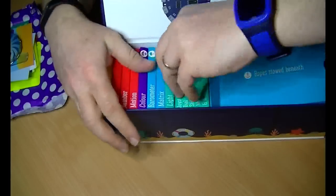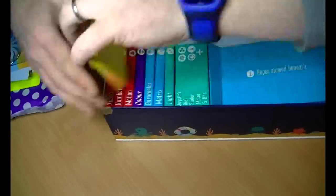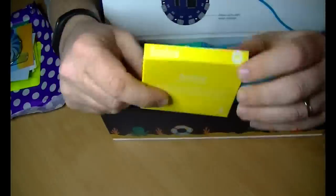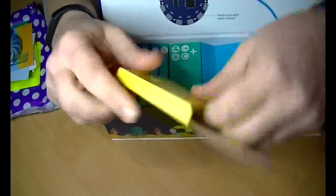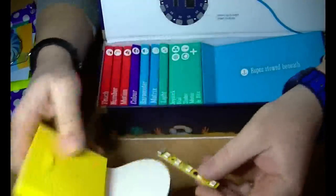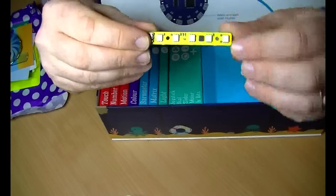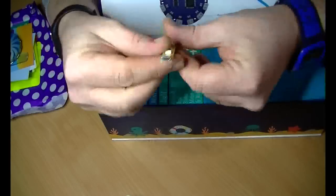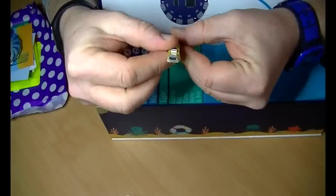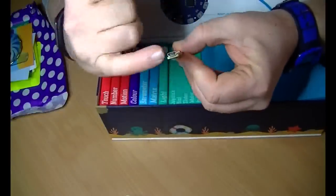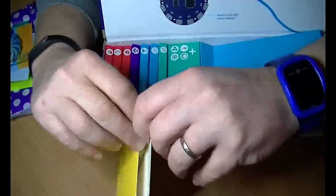We'll start at the start. This one is the Rainbow module, so basically it's a strip of LEDs. Again, everything is connected nice and easily, no soldering involved with the micro USB cables or connectors.